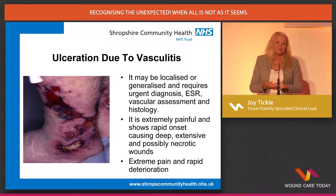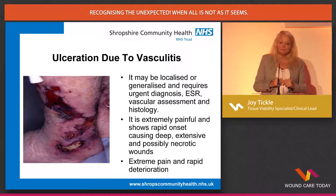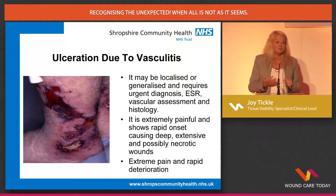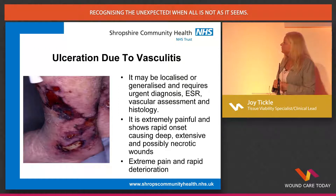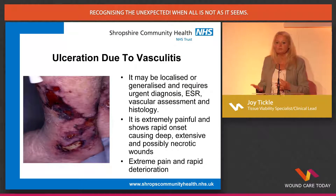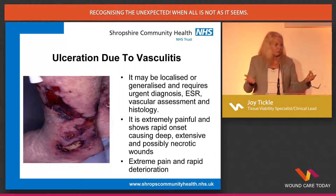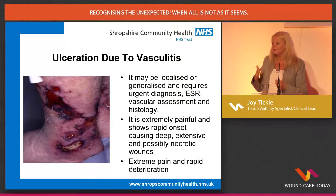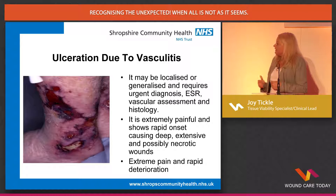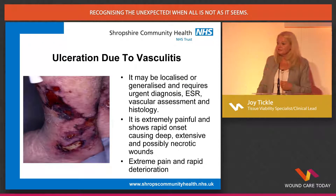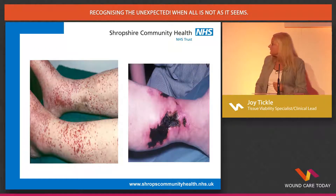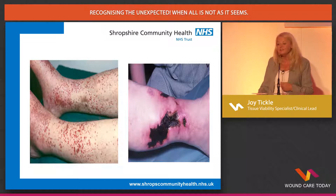It does require urgent diagnosis. If you've ever nursed anybody with significant ulceration from vasculitis, pain is a huge issue and risk of infection is a huge issue. These patients are very much sometimes called the non-concordant problematical patient because they can't tolerate a lot of the treatments we're trying to implement. We need to work as an MDT team. They need urgent diagnosis — looking at blood screenings for inflammatory markers, vascular assessment, and histology of that tissue. Without histology, we can't get a true diagnosis.